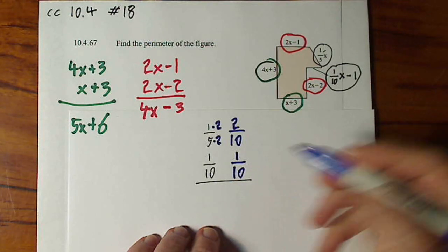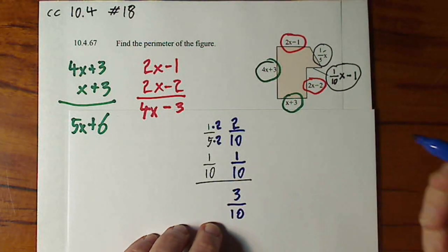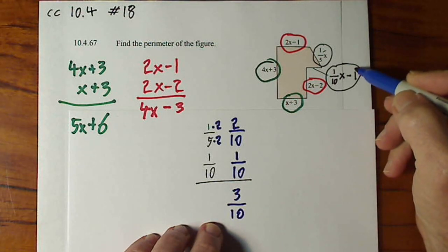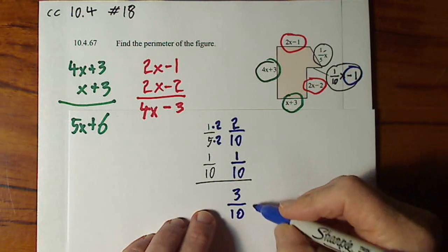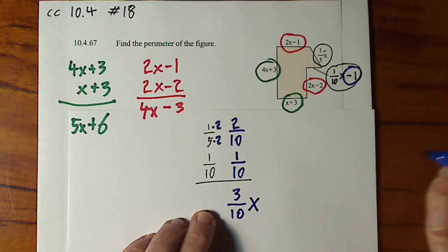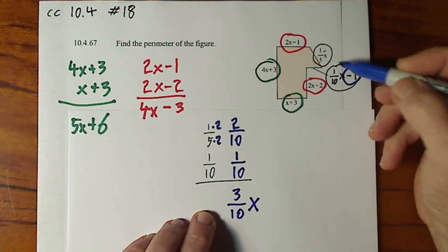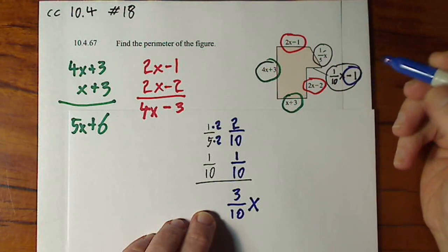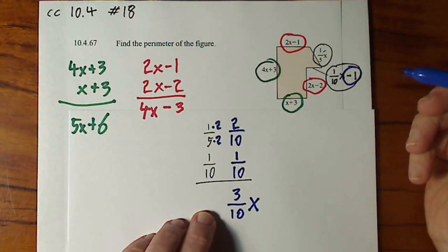When we add these two, we simply get 3 tenths. And remember here we had this negative 1, so it's 3 tenths x minus 1. Forgot to bring down my x, I'm sorry about that. You simply keep the variable. That's why it has to be the same variable in order to combine them, because you keep them.